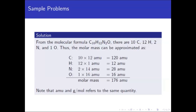Carbon has an atomic mass of 12, so 10 atoms times 12 AMU per atom gives 120 AMU. Hydrogen is 1 AMU, so 12 atoms times 1 gives 12. Nitrogen: 2 atoms times 14 each gives 28. And oxygen: 1 atom with 16 AMU per atom gives 16 AMU.